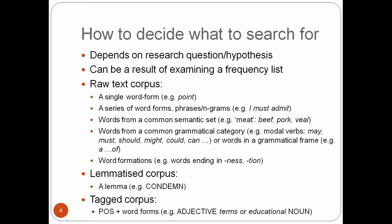How do you decide what to search for? You can use concordances for qualitative analysis of many different phenomena. What you search for depends on your research question or hypothesis, but it can also be a result of examining a frequency list.